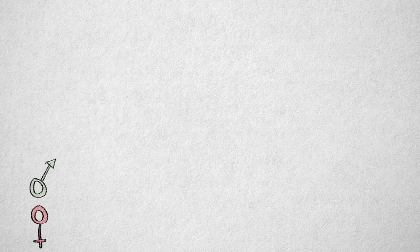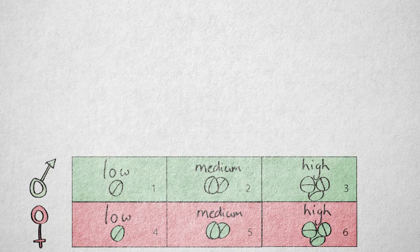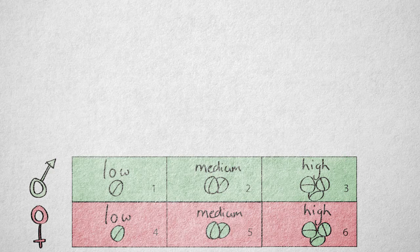If we make sure there are enough, preferably equal, numbers of men and women assigned to each of the dosages, then we end up with six conditions. Men who receive a low, medium, or high dosage, and women who receive a low, medium, or high dosage.